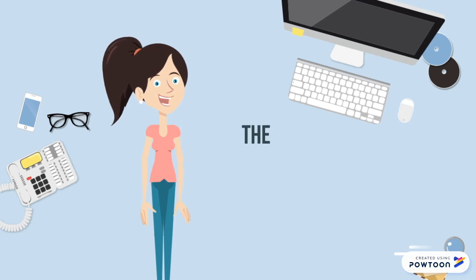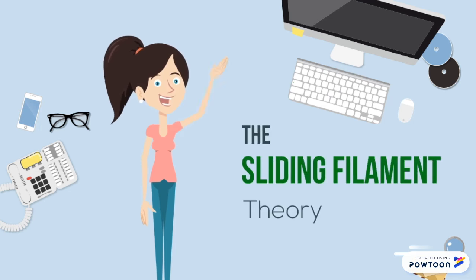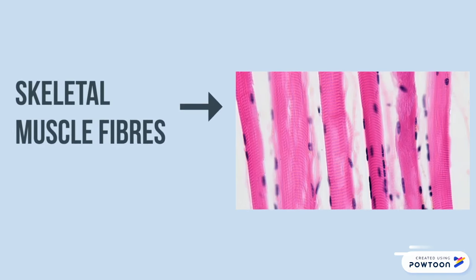Hey everyone, my name's Heather, and today I'm going to talk to you about the sliding filament theory. When you look at our skeletal muscle fibers under a microscope, you will notice they are striated in nature, meaning that they look like they have bands across them.